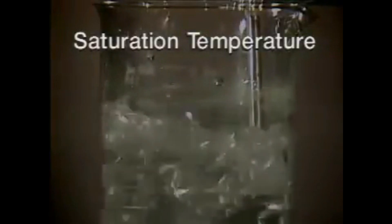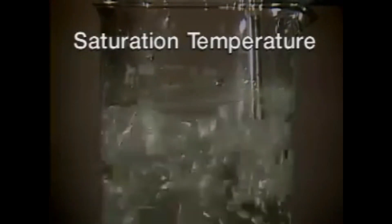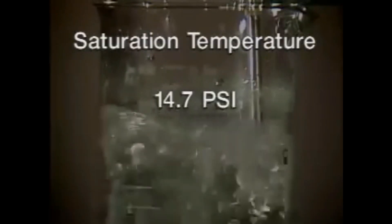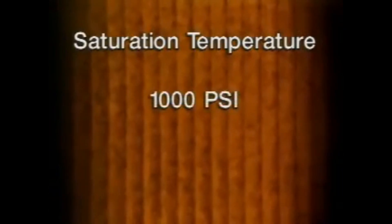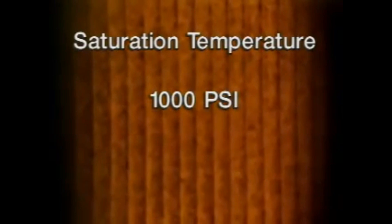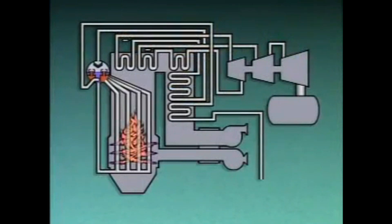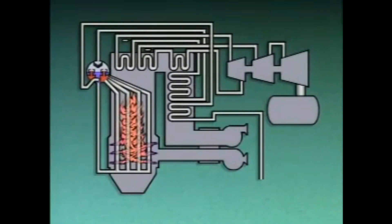As pressure increases, saturation temperature also increases. For example, at sea level, atmospheric pressure is 14.7 pounds per square inch. At that pressure, the saturation temperature of water is 212 degrees Fahrenheit. At a pressure of 1,000 pounds per square inch, the saturation temperature of water rises to 545 degrees Fahrenheit. When boiling occurs, as in this water wall, both water and steam are present and at saturation temperature. No matter how much heat is added to the boiler furnace, the temperature in the water walls will never rise above the saturation temperature as long as water is present.